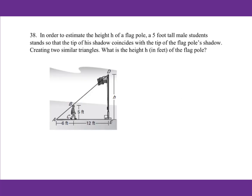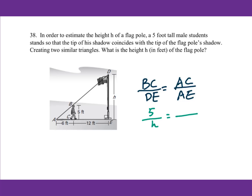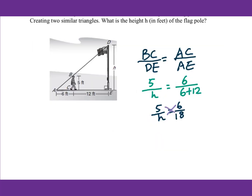For number 38, triangles ABC and ADE are similar to each other. Therefore BC over DE equals AC over AE. BC is 5, DE is H, AC is 6, and AE is 6 plus 12, which equals 18. So 5 over H equals 6 over 18. Cross multiply: H equals 5 times 18 over 6, which equals 15 feet.